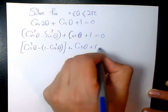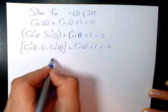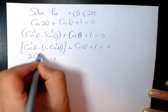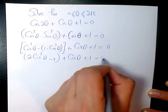Plus 1 equals 0. Then I start simplifying it. Here negative 1. Negative times negative is positive. So 2cos²(θ) + cos(θ) + 1 = 0.